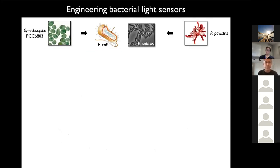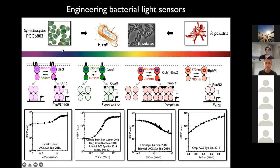We can often move two-component systems around. One thing my lab is focused on is optogenetics — taking light-sensing two-component systems from cyanobacteria and putting them in E. coli or Bacillus subtilis, reconstituting and optimizing their function. Over the years we've built light sensors that sense ultraviolet, green, red, and near-infrared light, and optimized their performance in these model organisms.